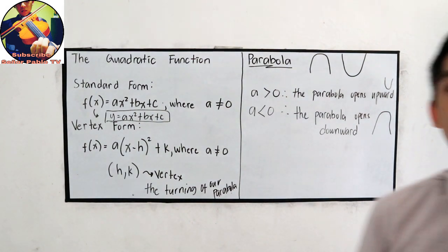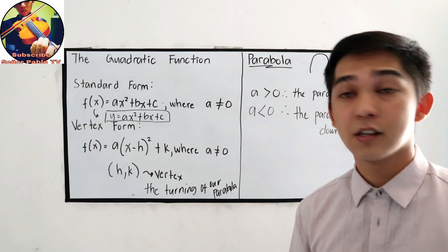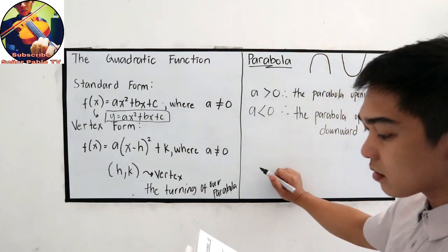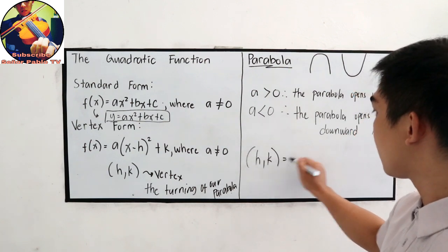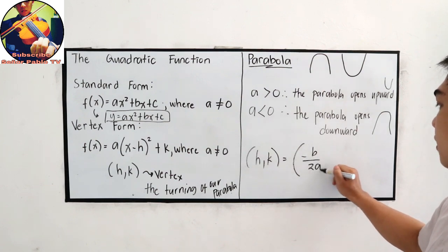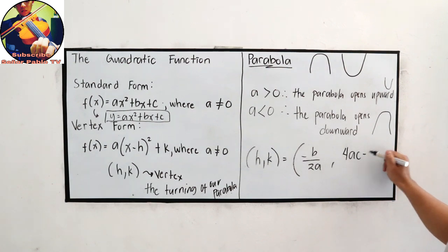We also have the shortcut formula for the vertex. The turning point of the vertex, the turning point of the parabola, the vertex, the HK, is equal to negative B over 2A. And for K, 4AC minus B squared, all over 4A.